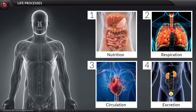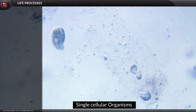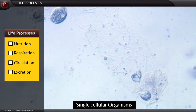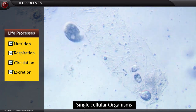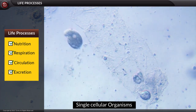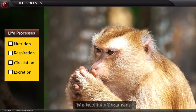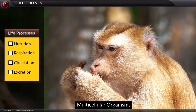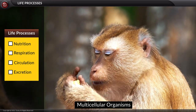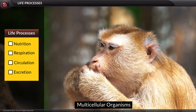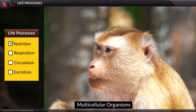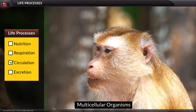For example, if I take a single-celled organism, it will have only a single cell which is performing all the functions. Whereas if I take a multicellular organism, there are many designated organ systems present in the body which are performing all these functions.